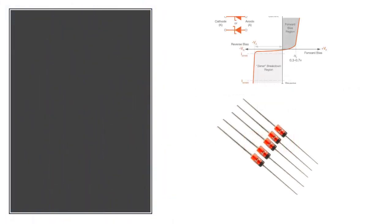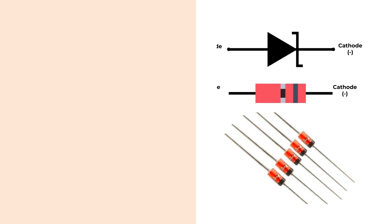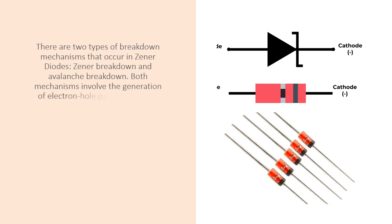There are two types of breakdown mechanisms that occur in Zener diodes: Zener breakdown and avalanche breakdown. Both mechanisms involve the generation of electron hole pairs due to high electric fields in the depletion region of the diode.